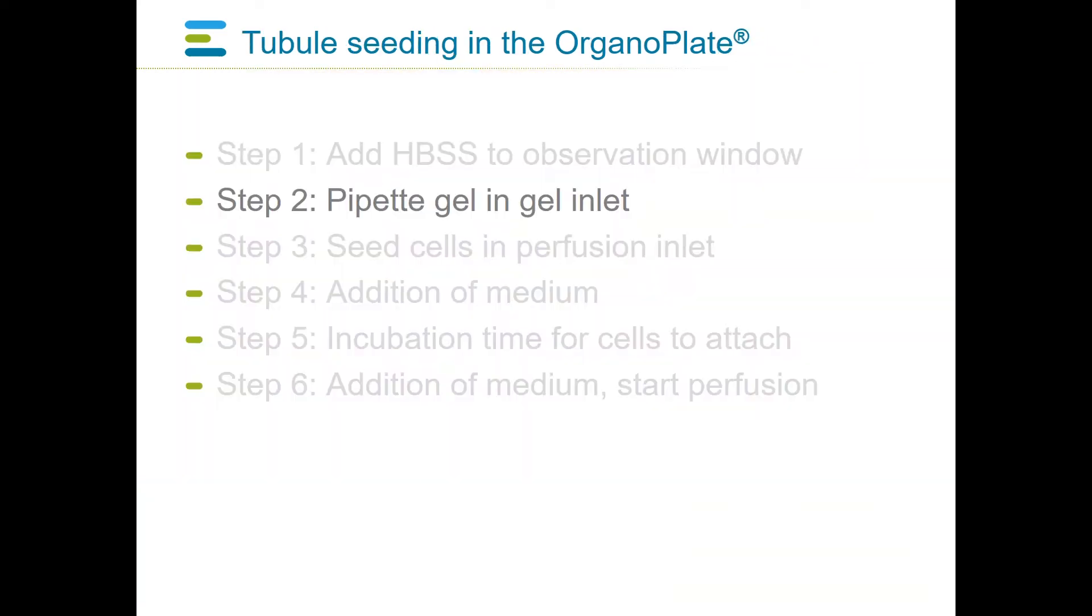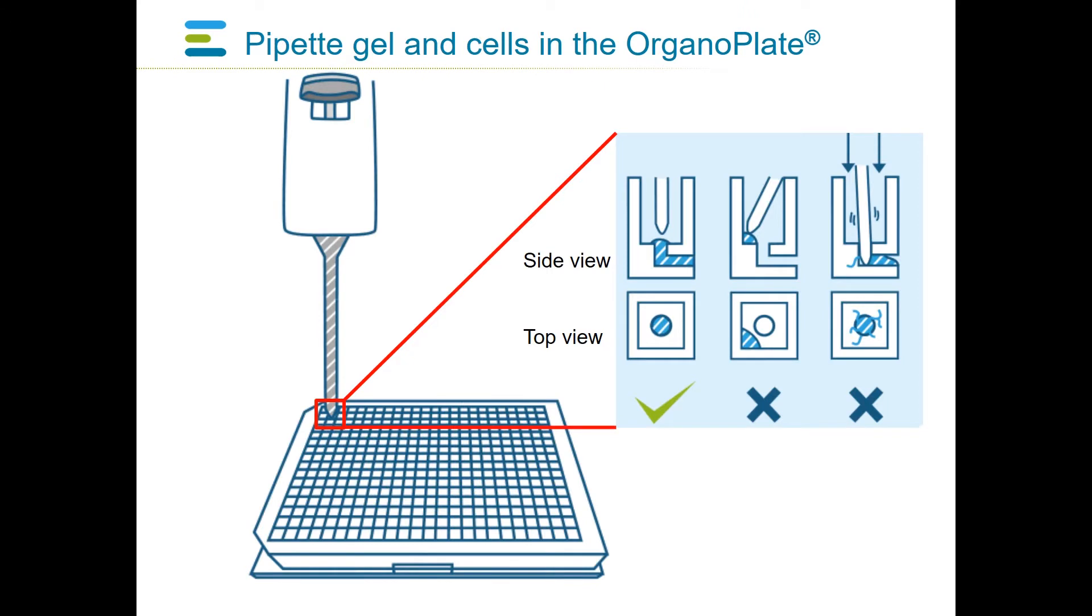In the second step, ECM gel is added onto the gel inlets. A single-channel repeating pipette is used to dispense two microliters of ECM gel in each of the gel inlet wells. Please ensure that the droplet of gel is dispensed centered on the bottom of the well. If the droplet is dispensed against a wall or in a corner, it might not get in touch with the microfluidic network, thus fail to fill it.